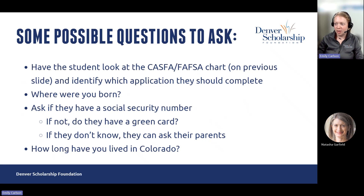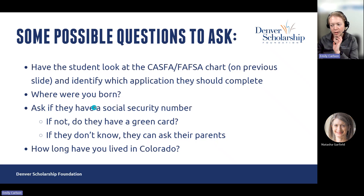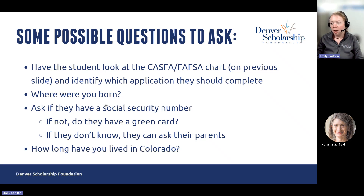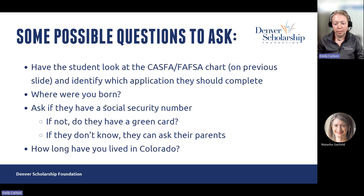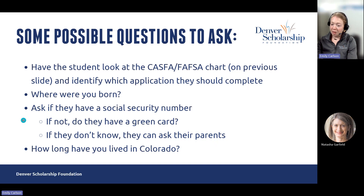Welcome back. Some possible questions that you can ask the student — and this is not an exhaustive list, just ones our advisors have used. You can have the student look at the CASFA or FAFSA chart to identify which application they should complete. Other questions may include where they were born. Depending on your relationship with the student, you can ask if they have a social security number, and if not, whether they have a green card indicating permanent residency. Sometimes they don't know, so you can have them ask their parents. Another question is: how long have you lived in Colorado?